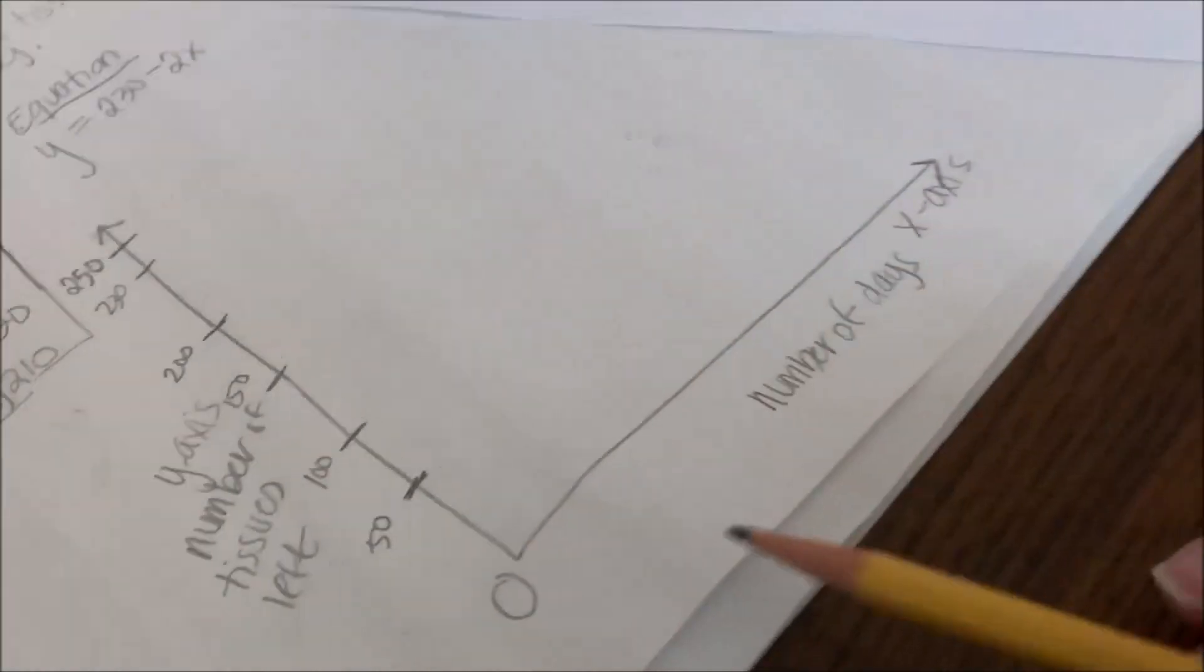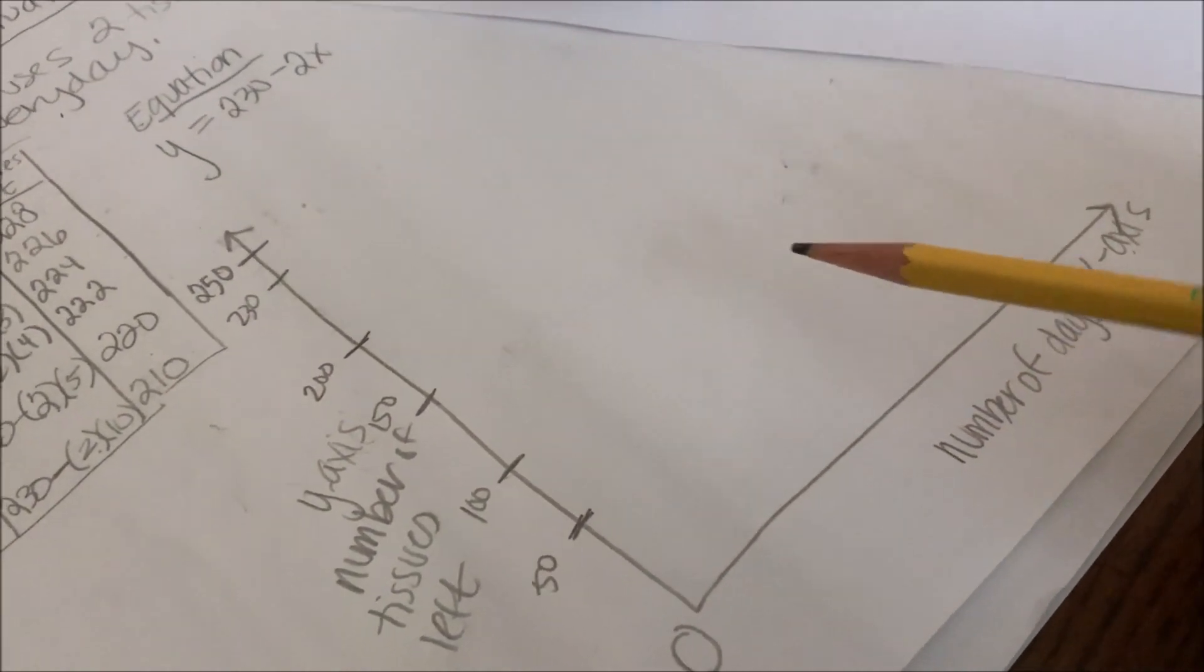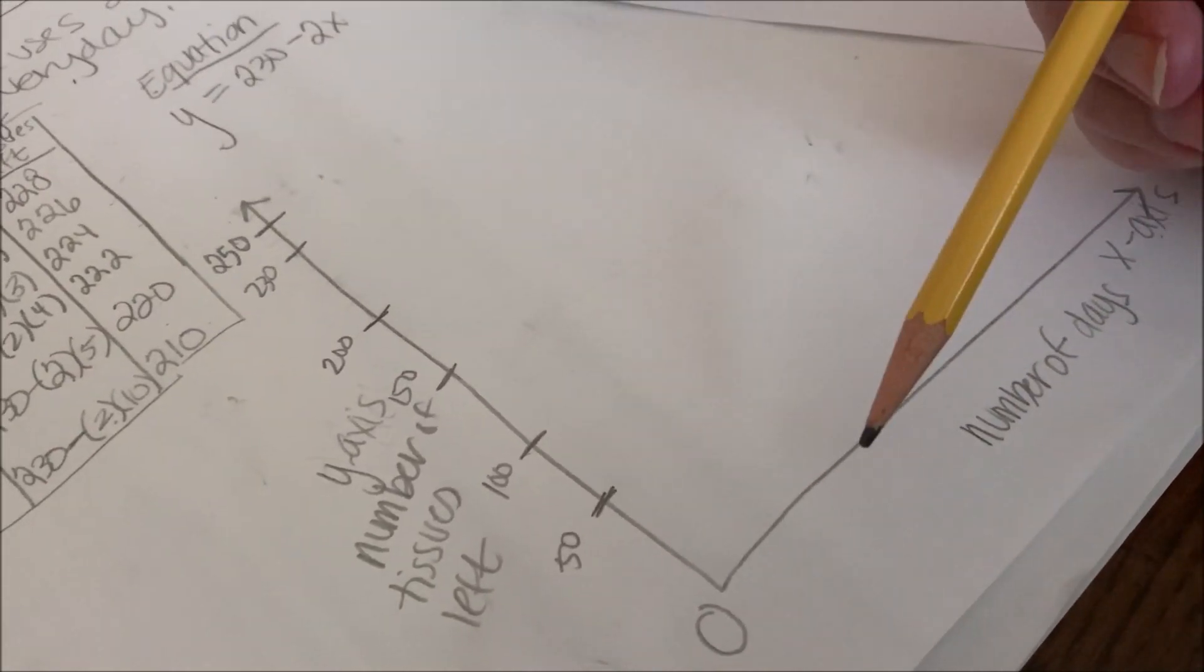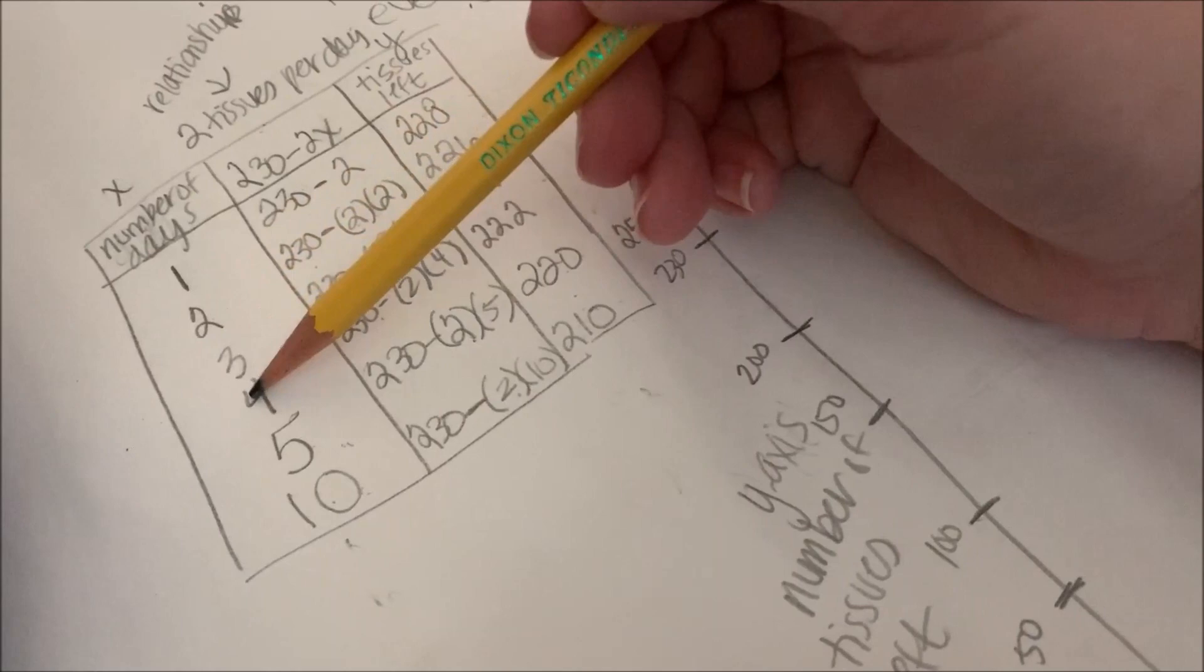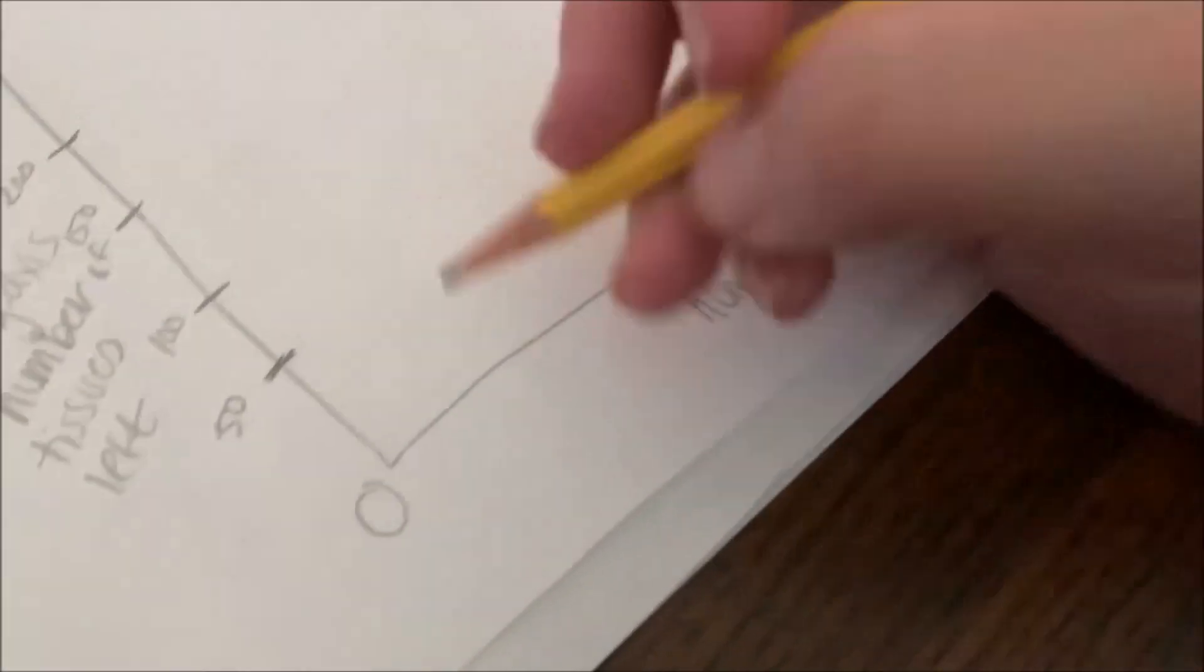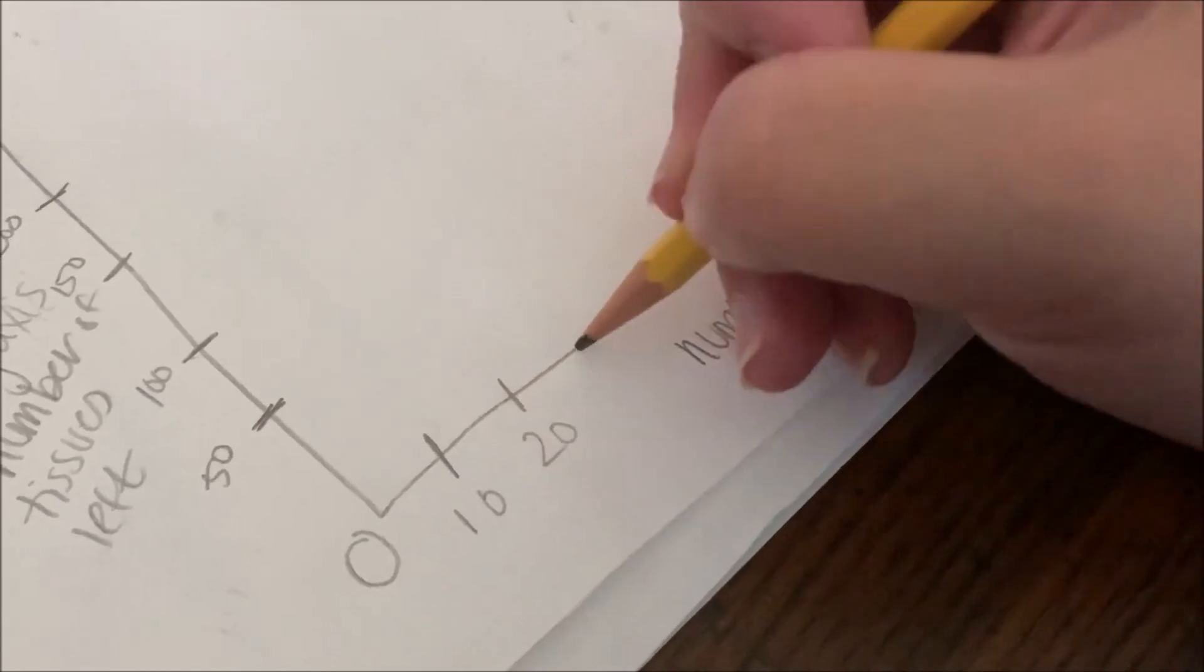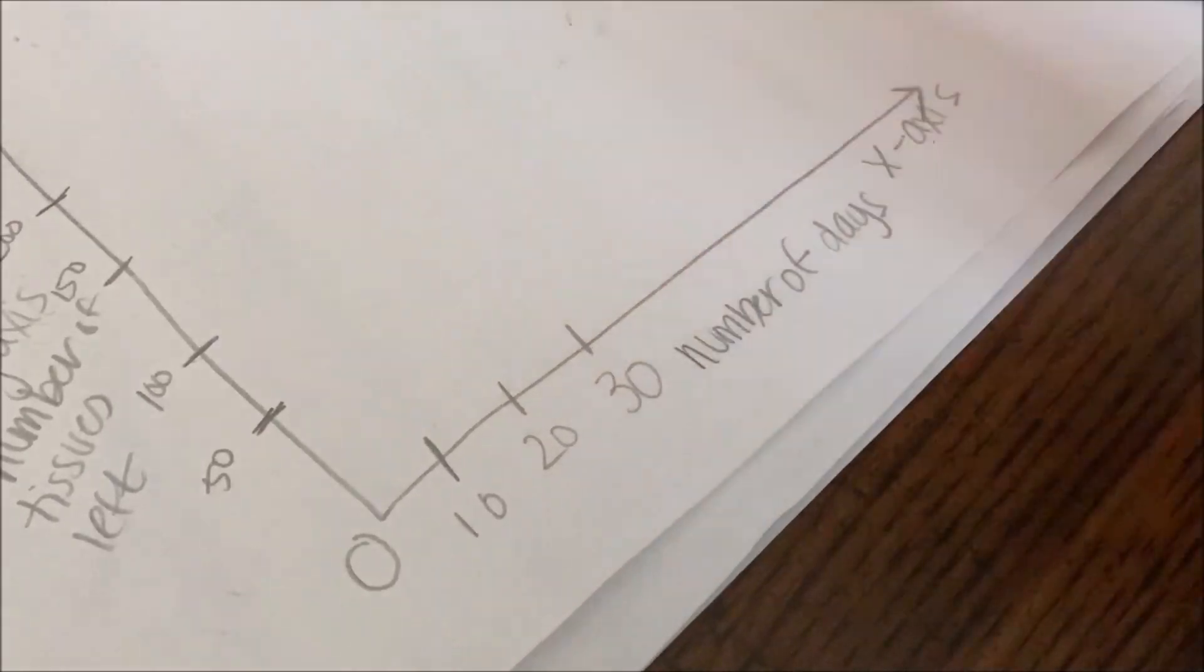So now let me think about my x-axis. You can kind of see I've been erasing a little bit. That's because I've been trying to figure out the best way to fit it. And when I think about it, I don't really want to know how many tissues are left each and every single day. I want to know about every 10 days. So I'm gonna go by 10s: 10, 20, 30.